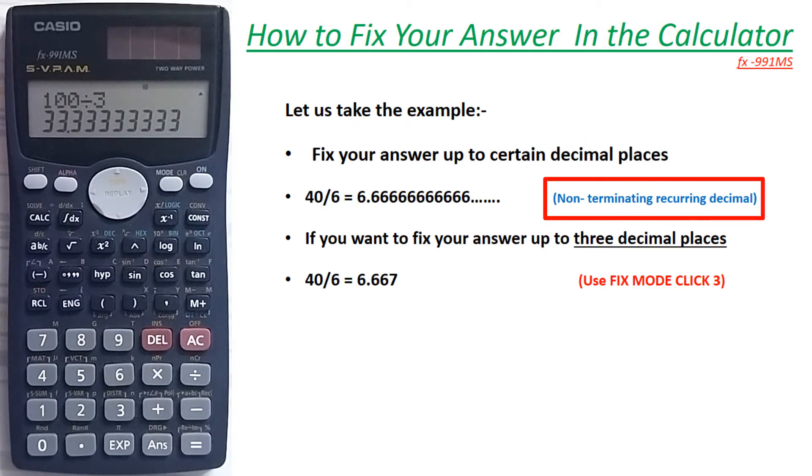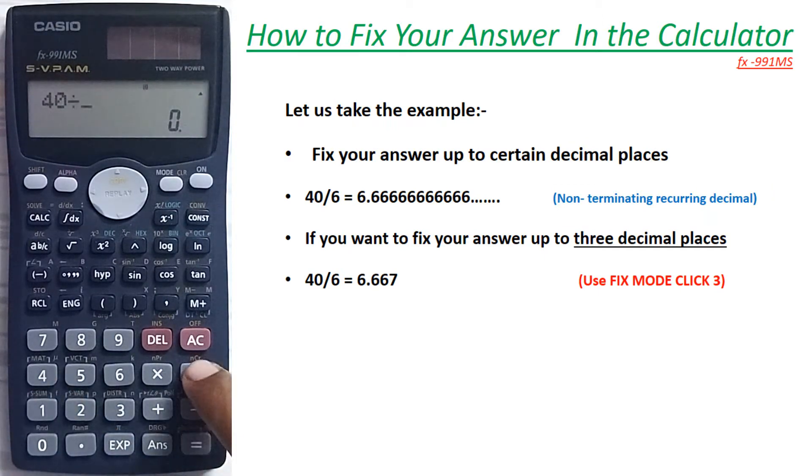Let us take the second example: 40 divided by 6. Now you can see here, answer is 6.66667. This is also a non-terminating recurring form.